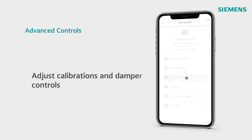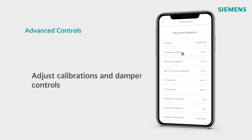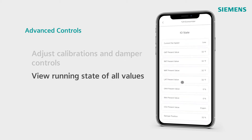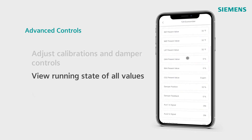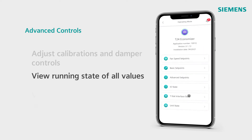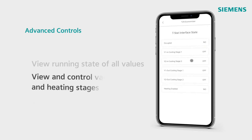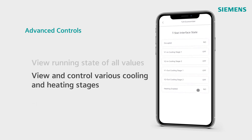Within advanced set points, you can adjust a variety of calibrations and damper controls. Select input output state to view the running state of all the values on the controller according to their setup. The thermostat interface allows you to view and control your various stages of cooling, as well as your heating stage.